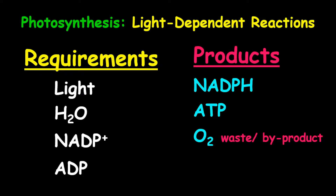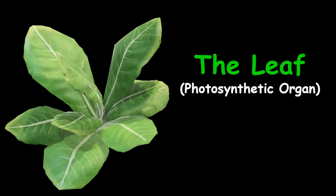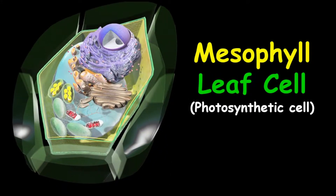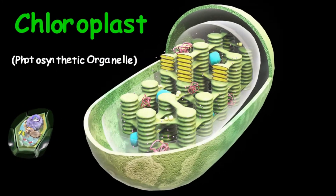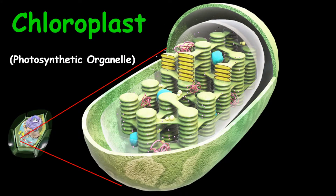Now let's take a journey through the plant, starting at the leaf, which is called the photosynthetic organ of the plant. Inside the leaf, we find specialized cells called the photosynthetic cells, otherwise called the mesophyll leaf cells, which include palisade and spongy mesophyll cells. Going into the photosynthetic cells, you will find specialized organelles called chloroplasts — the organelle responsible for photosynthesis. Inside the chloroplasts is a specialized structure called the thylakoid, which is responsible for the light-dependent reactions.